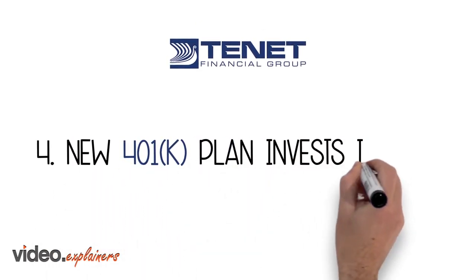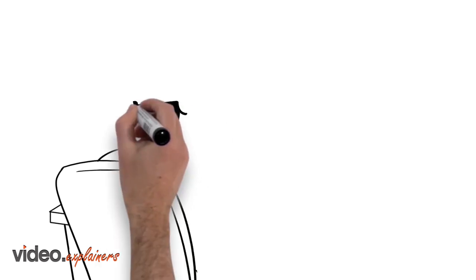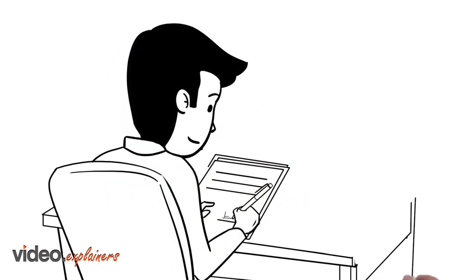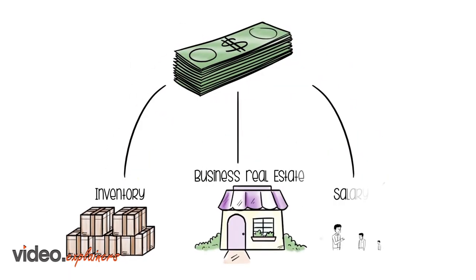Step 4: New 401k plan invests in the corporation. The new 401k plan purchases stock in the corporation, and the corporation can now purchase a business or franchise. The funds can also be used for other business expenses too.